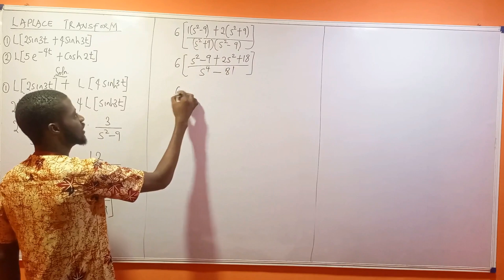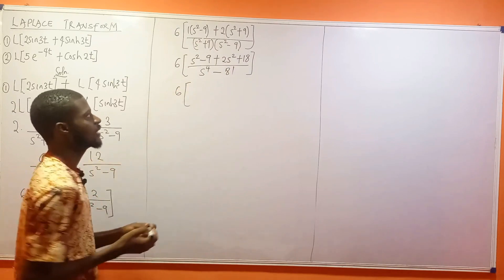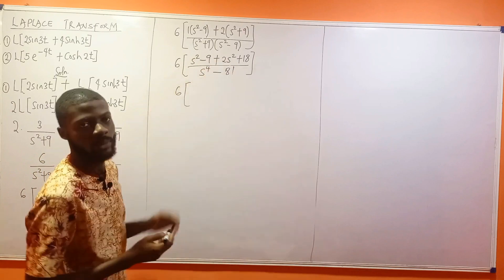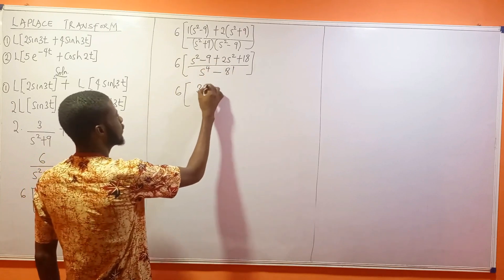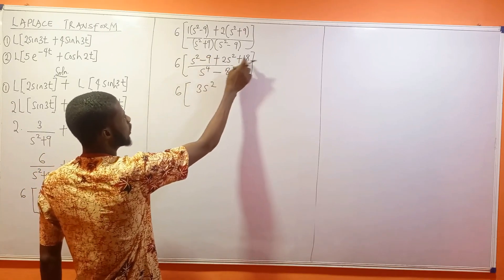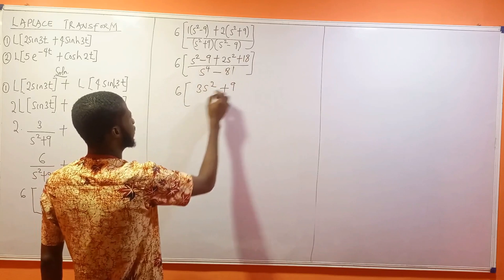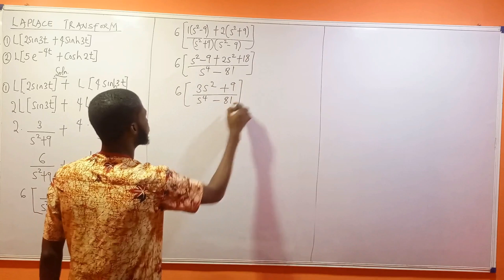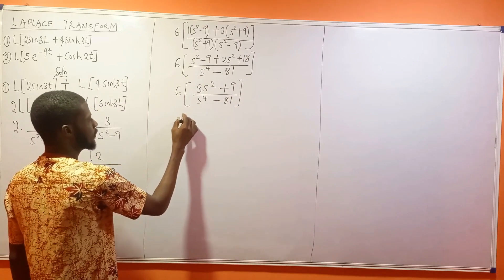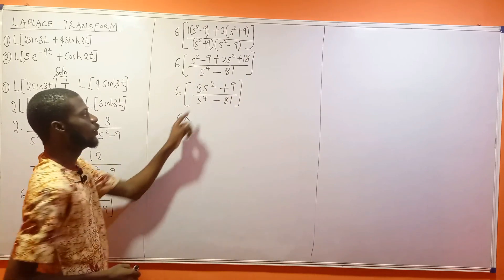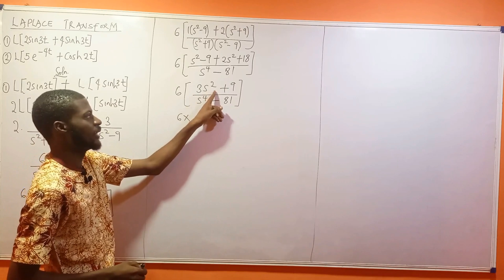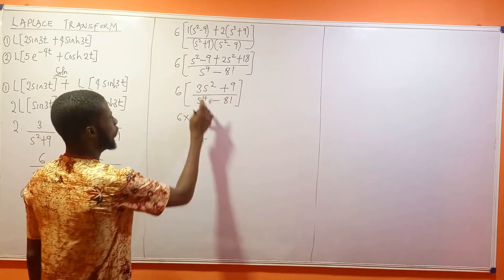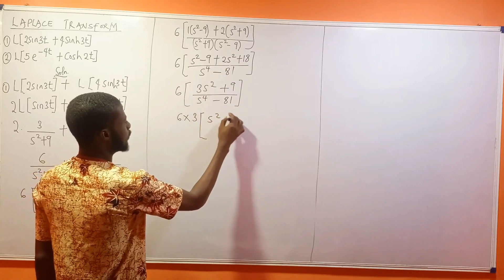So we have 6 times (s² plus 2s²) which gives 3s², and minus 9 plus 18 gives plus 9, all divided by s⁴ minus 81. Now looking at the numerator, 3 is common, so this is 6 times 3 times the bracket (s² plus 3) divided by s⁴ minus 81.